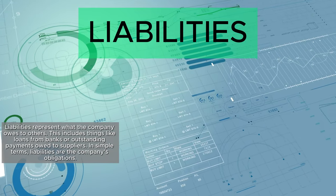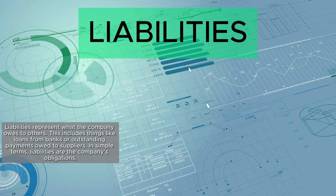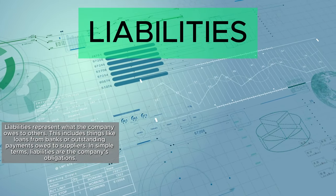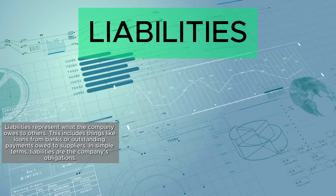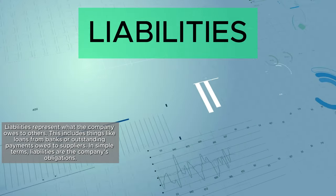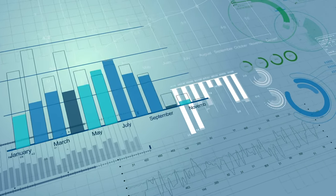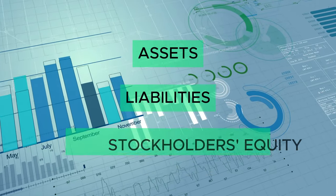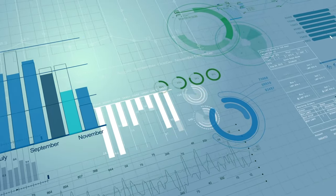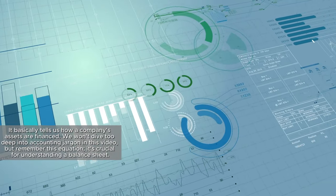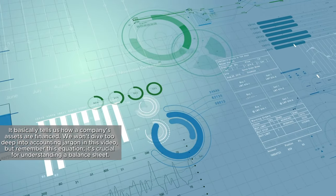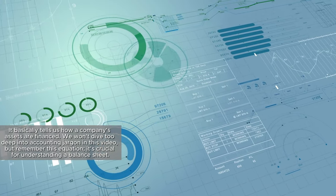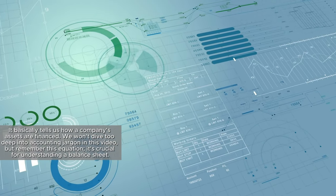Liabilities represent what the company owes to others. This includes things like loans from banks or outstanding payments owed to suppliers. In simple terms, liabilities are the company's obligations. The core accounting equation is: assets equals liabilities plus stockholders' equity. It basically tells us how a company's assets are financed. We won't dive too deep into accounting jargon in this video, but remember this equation — it's crucial for understanding a balance sheet.